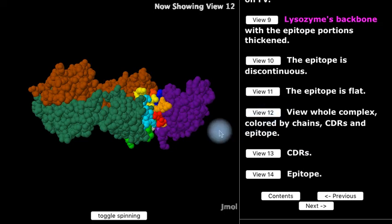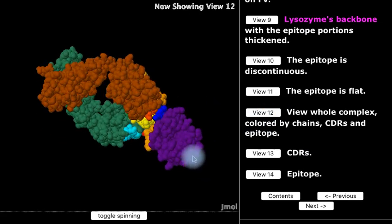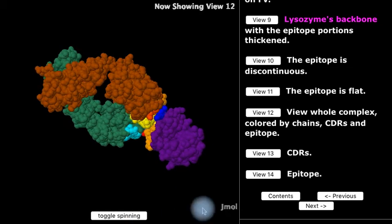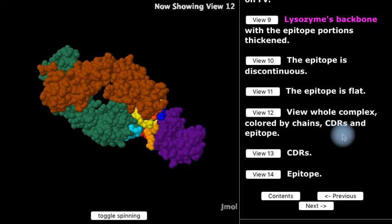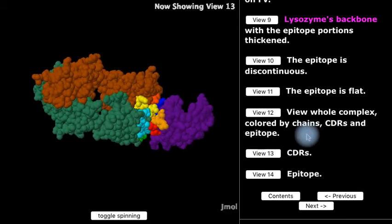Here again we see the whole FAB on the left with its four immunoglobulin domains and lysozyme on the right, but now we have the paratope and epitope regions colored.